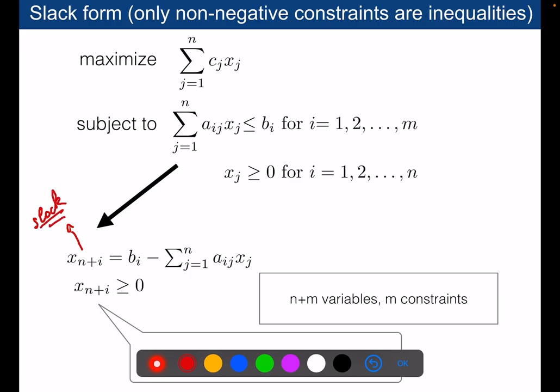Of course, if this slack variable is equal to zero, it means that it's equivalent to have an equality here, and we say that the constraint in that case is tight.